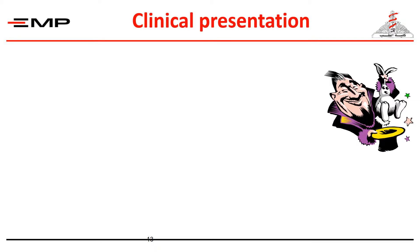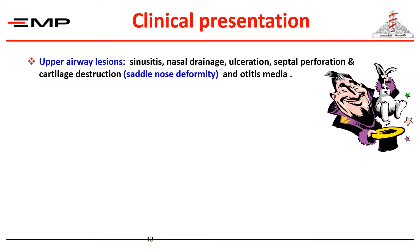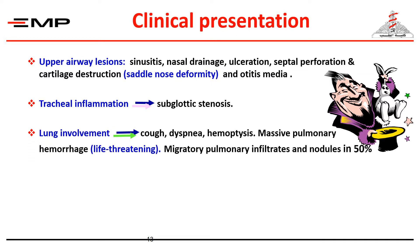The clinical presentation includes upper airway lesions: sinusitis, nasal discharge, ulceration, septal perforation, cartilage destruction, saddle nose deformity, and otitis media. There is also tracheal inflammation and subglottic stenosis. Moving to lower airway involvement: cough, dyspnea, and hemoptysis can occur.